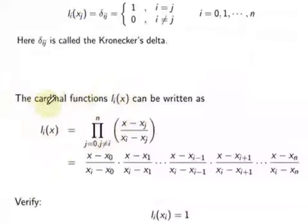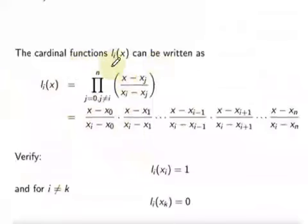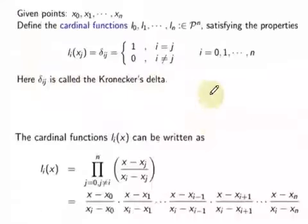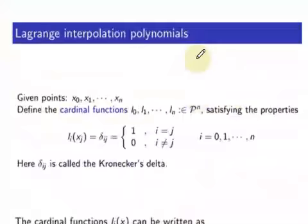These cardinal functions are all different from each other, and that takes a lot of time to compute. Computing these cardinal functions is time-consuming, and therefore that is a negative point of using the Lagrange polynomial.